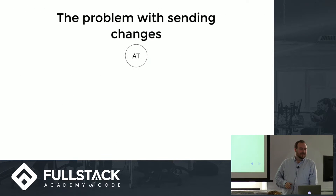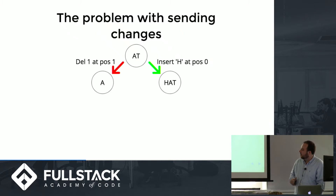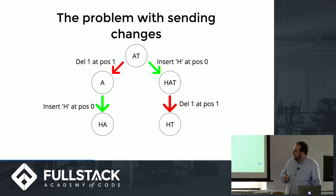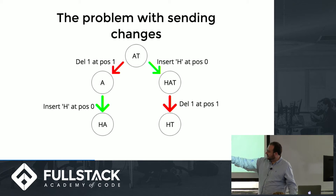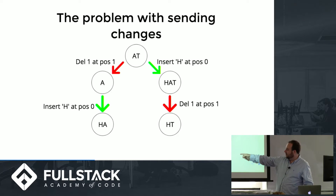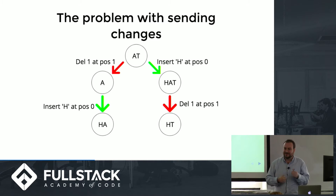The problem with this is that you end up with a weird situation. Say two people are editing at the same time: one person deletes the T at position 1, the other inserts H at position 0. It will broadcast out those changes to each other. But because what is at position 1 has changed for one person, all of a sudden not only do you not get what you expect, but you have two different versions of the text on two different computers — which is not great for collaboration.